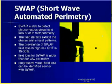Field loss for SWAP is wider than for white-on-white perimetry. Progressive visual field loss can be identified sooner with SWAP. Those are the advantages of short-wave automated perimetry, yet there are limitations. For example, the test is very long and can be boring and tiresome to aging patients. Media opacity affects the test markedly because they absorb the yellow or blue wavelengths.